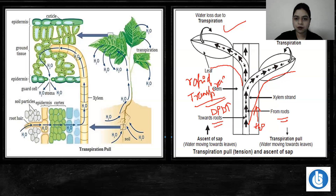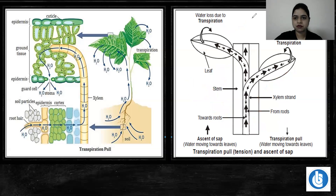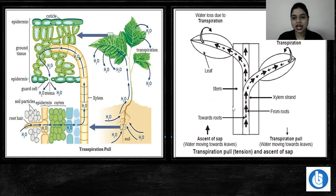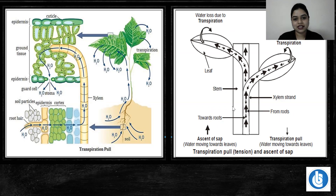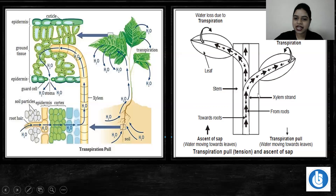Today's concept is Ascent of Sap. Somebody just posted a doubt — Parth is asking about the root. This is never possible that water comes from above downward to the root. The root is the root — it is a universal rule. In the second diagram, you can see all the arrows are going up. The arrow coming from below is a small arrow showing the translocation of food, not water going downward.